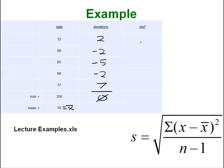So those are our deviations. Now we square them all. So that's 4, 4, 25, 4, and 49. These numbers here just basically represent this piece of the formula. We've taken the deviations and then we've squared them.